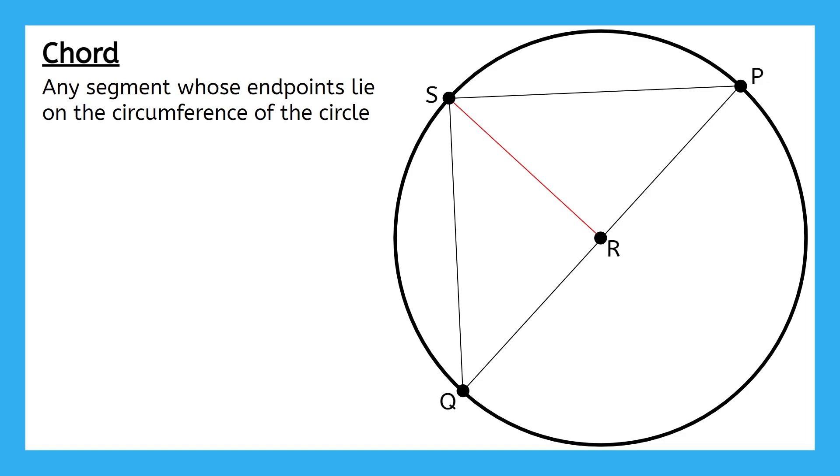Go back through the terms we've already talked about to refresh your memory. What does segment SR represent? SR is a radius, since one of its endpoints is the center of the circle and the other is on the circle.